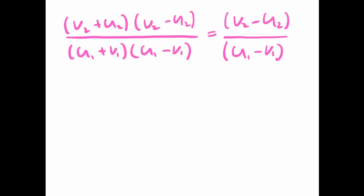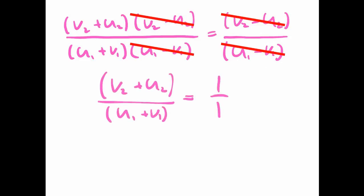And what we find is, these terms cancel. On the left-hand side, we've got V2 minus U2. And on the right-hand side, we've got V2 minus U2. So we can get rid of them. And then also on the left, we've got V1 minus U1. And on the right, we've got U1 minus V1. So they can go as well. And we end up with this.